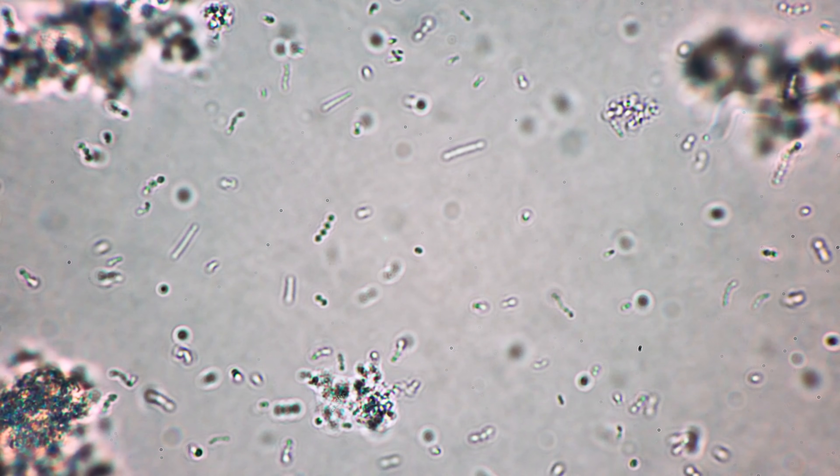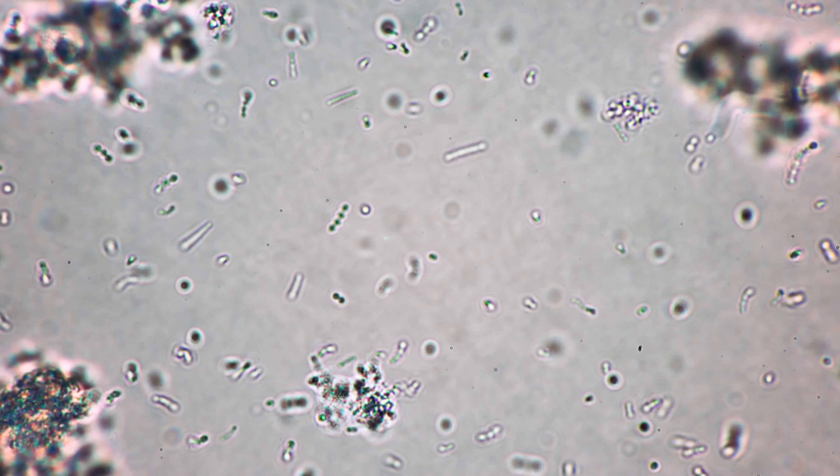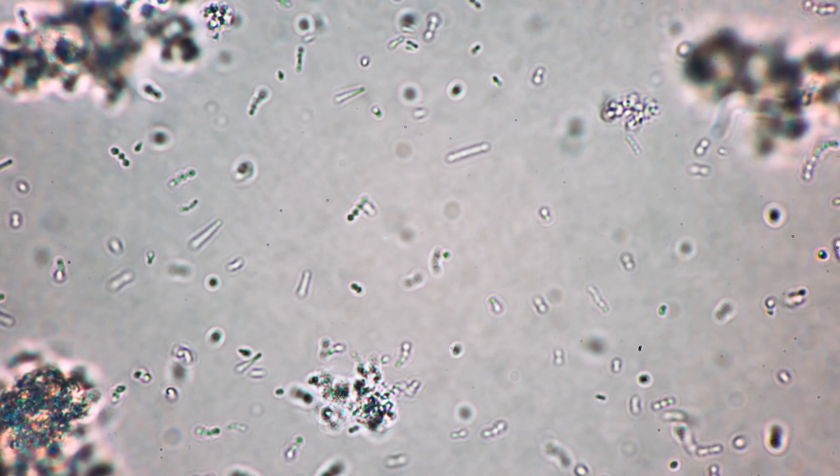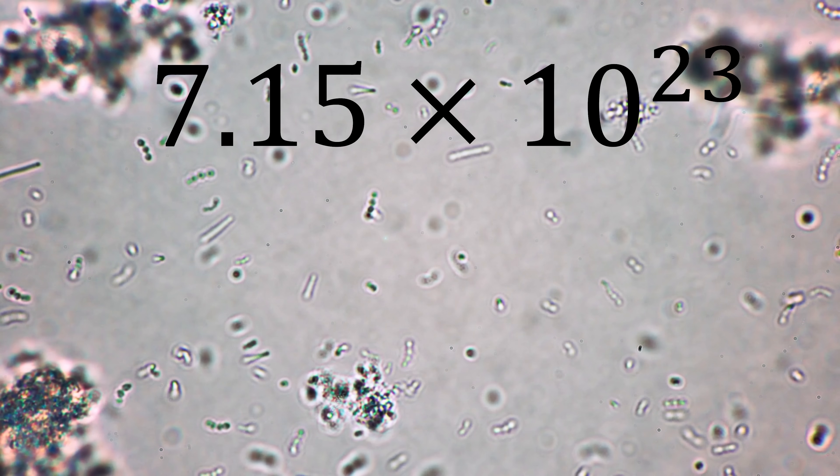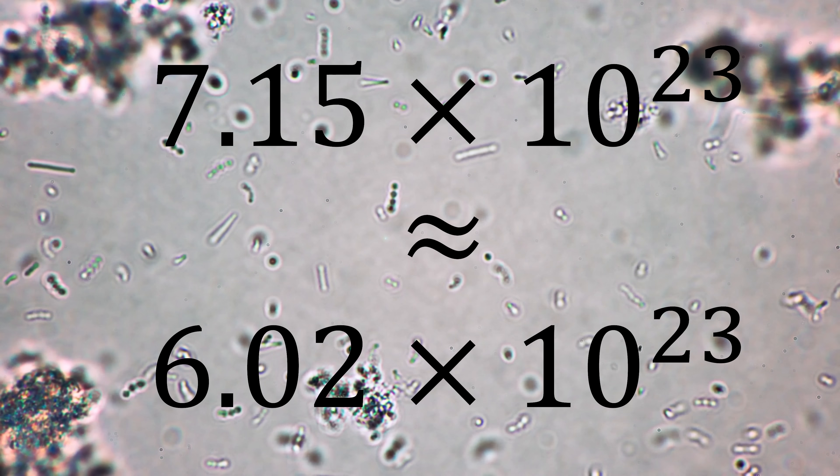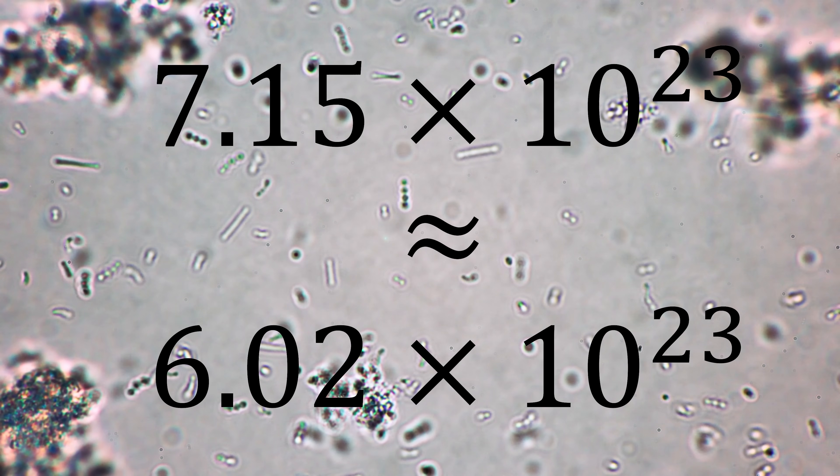Three years later, Jean Perrin actually conducted that experiment and calculated Avogadro's number to be 7.15 times 10 to the 23. We now know it to be 6.02 times 10 to the 23. Hey, I mean, that's not bad, is it?